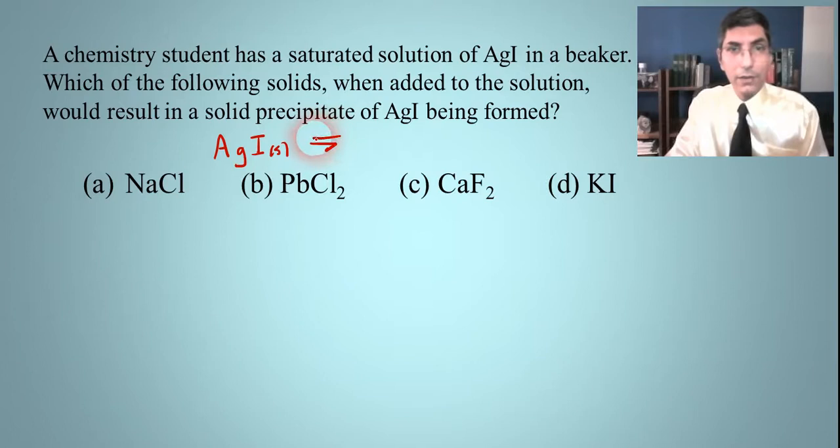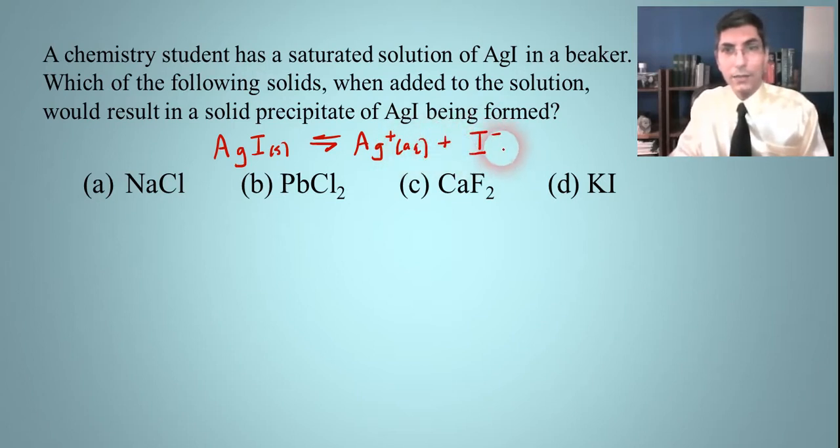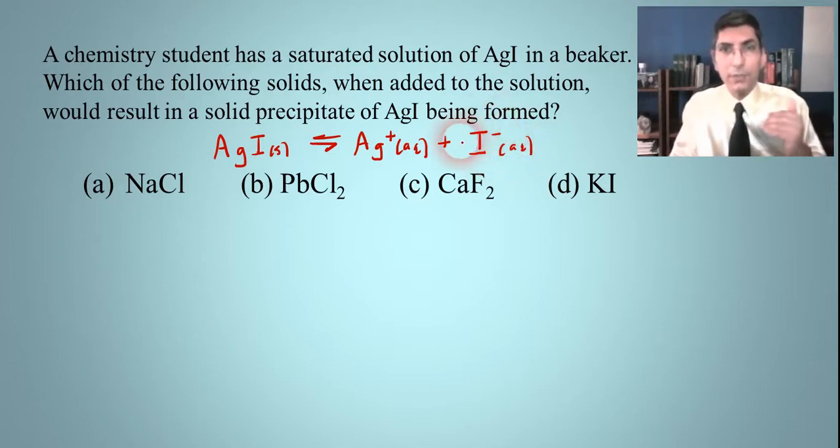So silver iodide, of course, is a solid, and its dissociation would be into silver ions aqueous and iodide ions, which of course are also aqueous. And so remember, if you want to make a solid precipitate of silver iodide, that means you want to shift this equilibrium to the left. And the way that you do that is by adding product, right? You'd either have to add silver ions or iodide ions.